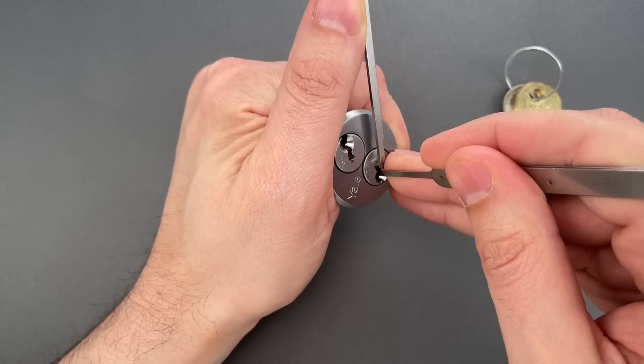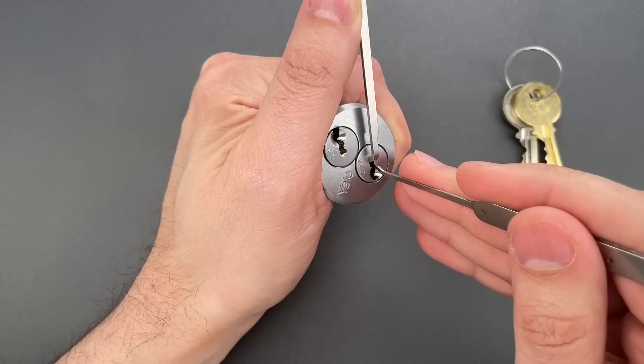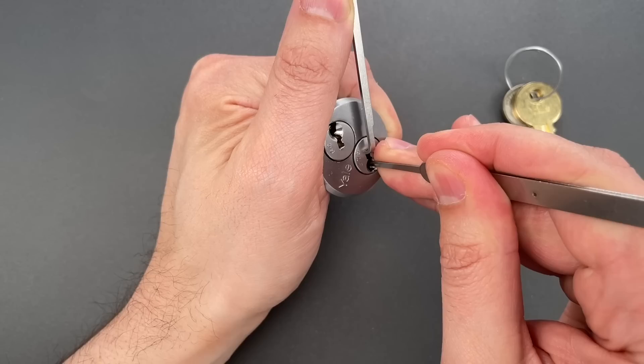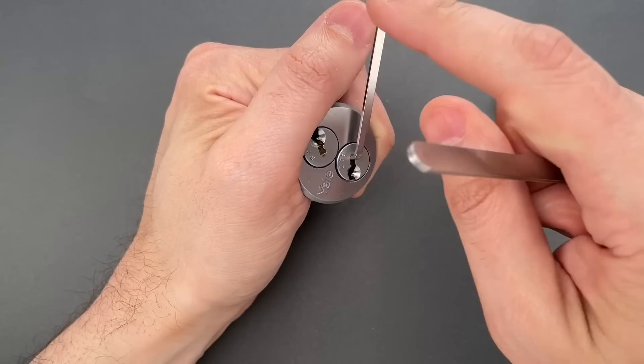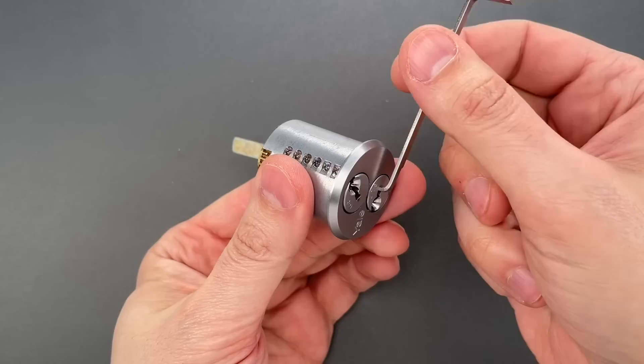Click out of 3, nothing on 4, click out of 5, a little click on 6, back to the beginning, nothing on 1, a little click on 2, nothing on 3, 4 is binding, nice click there, nothing on 5 or 6, back to the beginning, click out of 1, and we got this open.